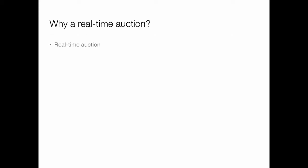Let's review. Why use a real-time auction? Prices are going to vary widely between auctions for different keywords. There's a reserve price of just five cents, and it is often the case that there's only one bidder on a keyword, so that's what you get. But some phrases get $30 a click, some phrases get $100 a click, especially for things like leading to leads for law firms.